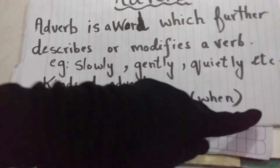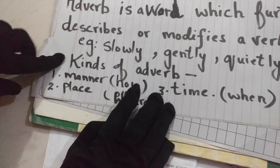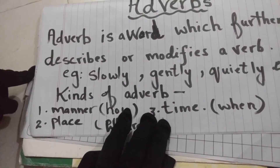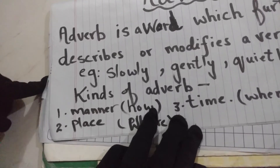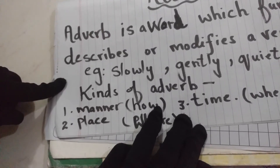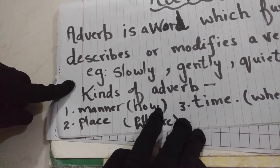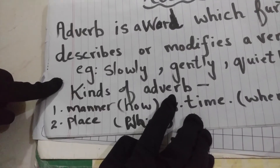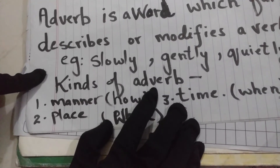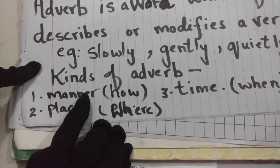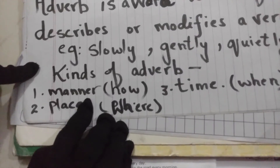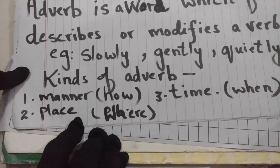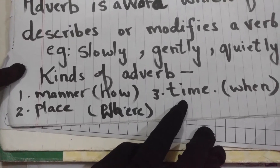Now if you have read about adverbs in previous classes, you don't need to go into more detail here. This is the kinds of adverbs. We have three kinds: adverbs of manner, adverbs of place, and adverbs of time.